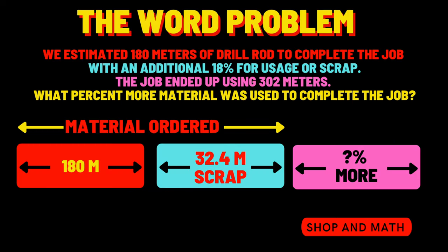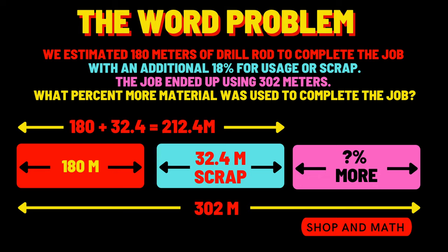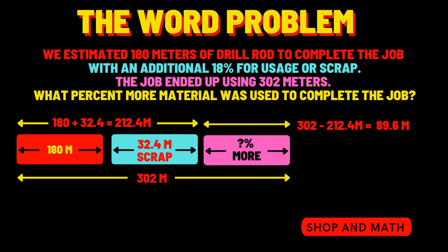The amount of material we ordered is 180 meters plus 32.4 meters, which equals 212.4 meters. The total amount of material actually used on this job was 302 meters. So 302 minus 212.4 equals 89.6 meters. Therefore we used 89.6 meters more material than we had anticipated.